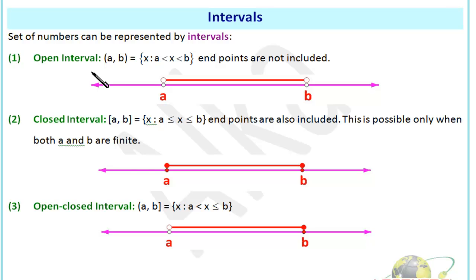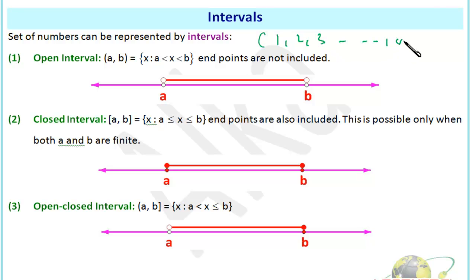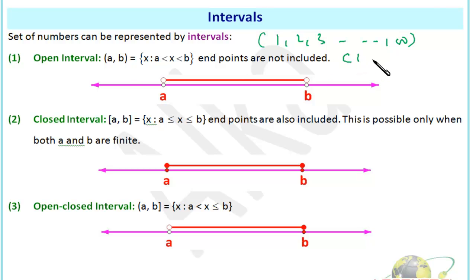Now let's discuss intervals. A set of numbers can be represented by intervals. In mathematics, when we have to represent a set of numbers — say from 1 to 100 — it's not possible to write all the numbers every time, because it becomes a lengthy process. So in mathematics we represent numbers using intervals. There are three types: open interval, closed interval, and mixed intervals. An open interval from a to b means we take all numbers from a to b, but a and b are both not included.